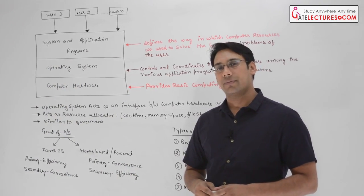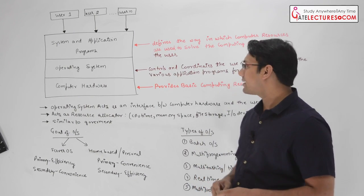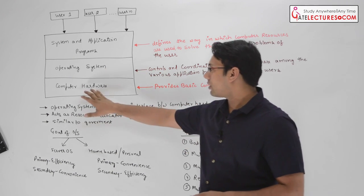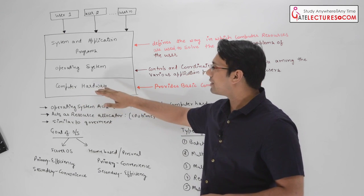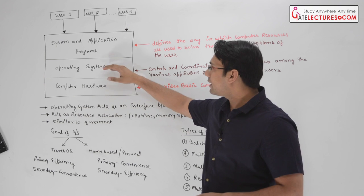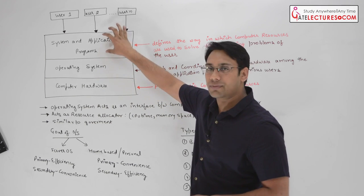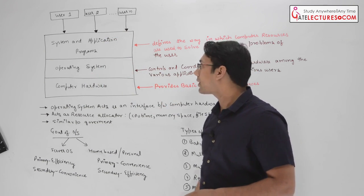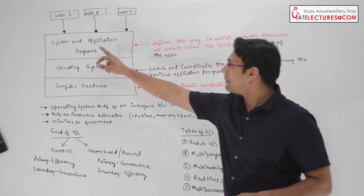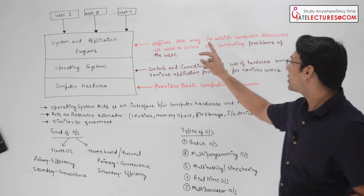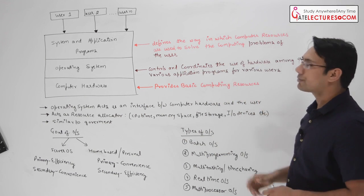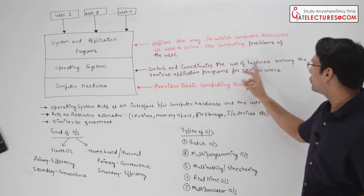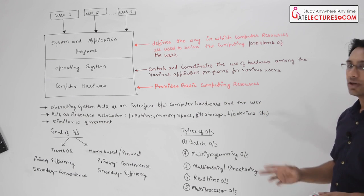Now let us discuss what is an operating system. An operating system acts as an interface between the computer hardware and the user. As you can see in this diagram, the computer hardware is at the base, the operating system resides over the hardware, and it provides an interface to the application programs so they can use the computer hardware efficiently. The application and system programs define the way in which computer resources are used to solve computing problems of a user. The operating system controls and coordinates the use of hardware among various application programs for various users.